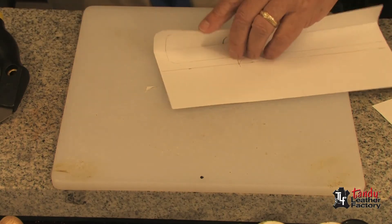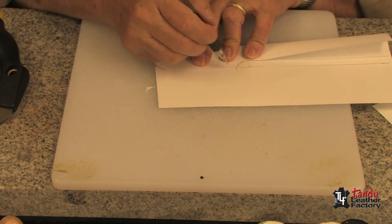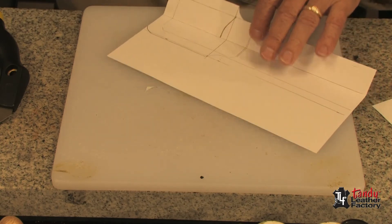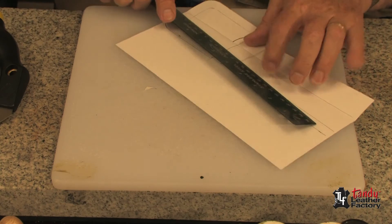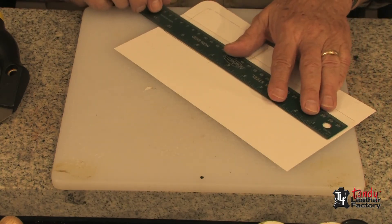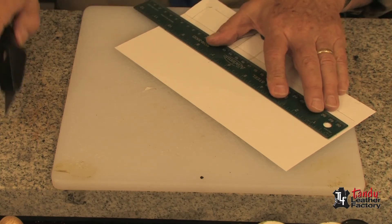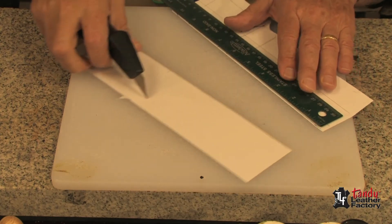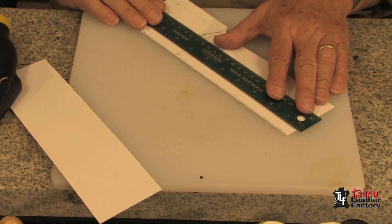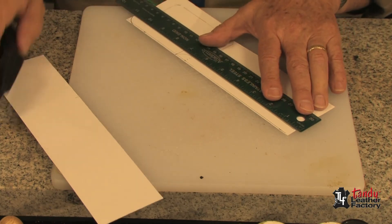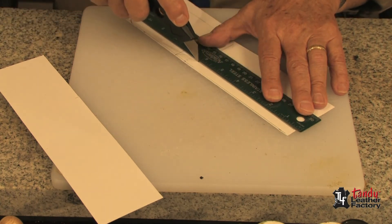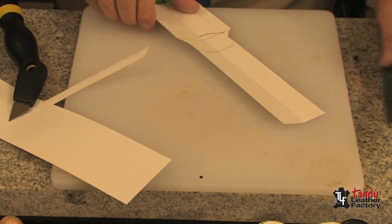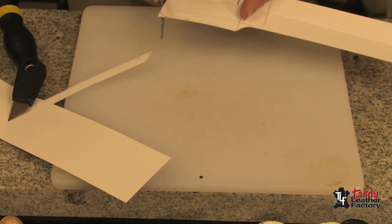We will fold that over and draw that as well. Now we will take our knife and our straight edge and cut out the other side. And with the shears we'll cut the other curve.